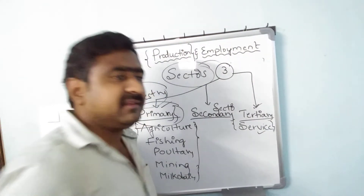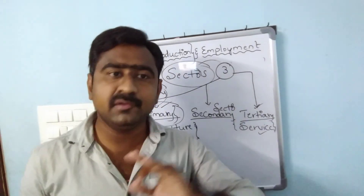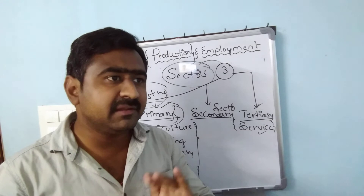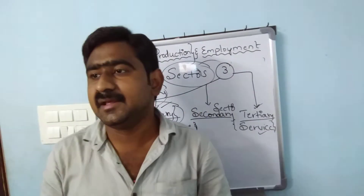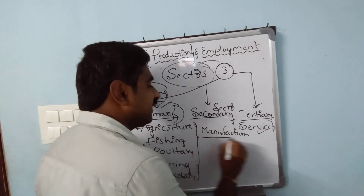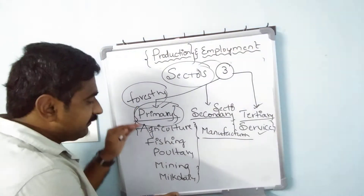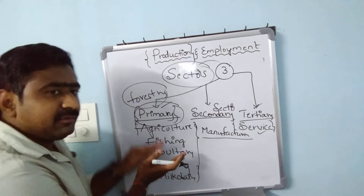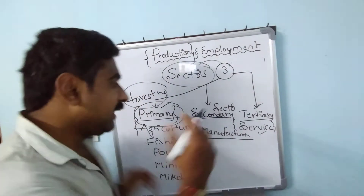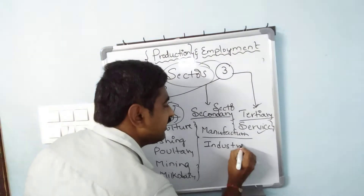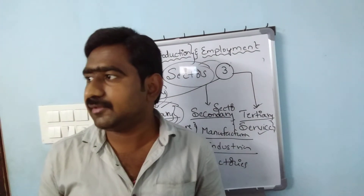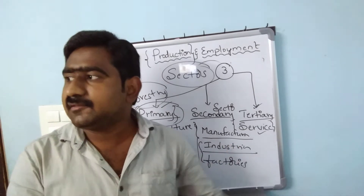Now, the secondary sector. This sector is mainly related to manufacturing units — all the industries and factories. The raw materials from the primary sector are converted in industries and factories. So all manufacturing units like industries and factories come under the secondary sector.